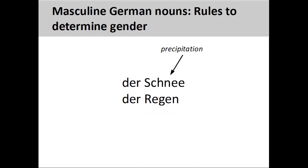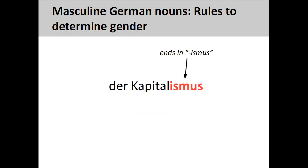Forms of precipitation, such as 'Schnee' (snow) and 'Regen' (rain), are masculine nouns. Nouns ending in '-ismus,' such as 'Kapitalismus' (capitalism), are masculine.